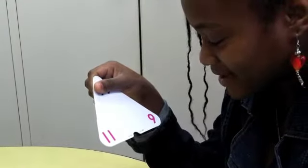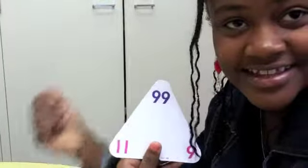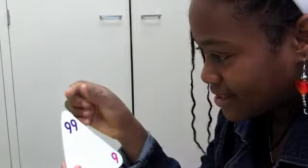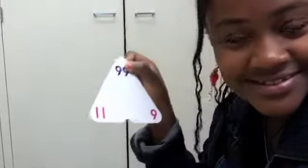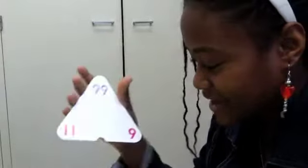Eleven times nine equals ninety-nine. Great. Ninety-nine divided by nine equals eleven. Wonderful. One more. Ninety-nine divided by eleven equals nine.